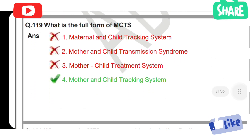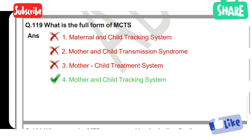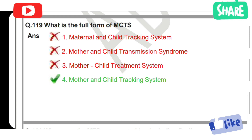What is the full form of MCTS? Option 1: Maternal and Child Tracking System. Option 2: Mother and Child Transmission Syndrome. Option 3: Mother Child Treatment System. Option 4: Mother Child Treatment System. Option 1 is the correct answer — maternal and child tracking system is the full form of MCTS.